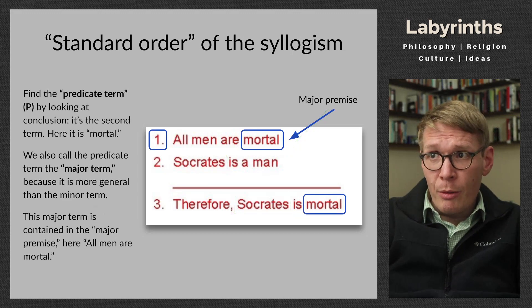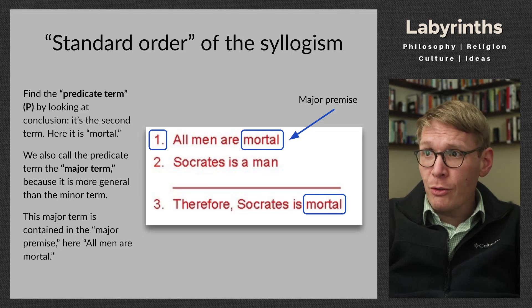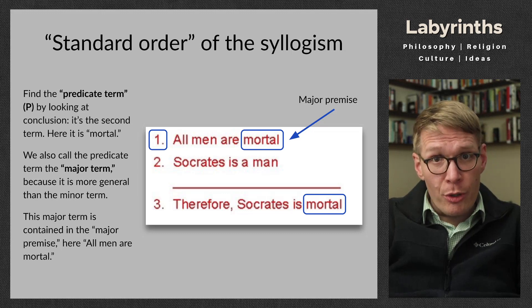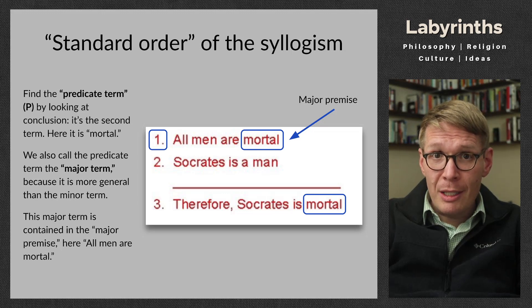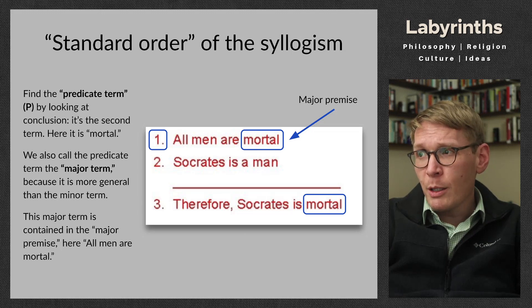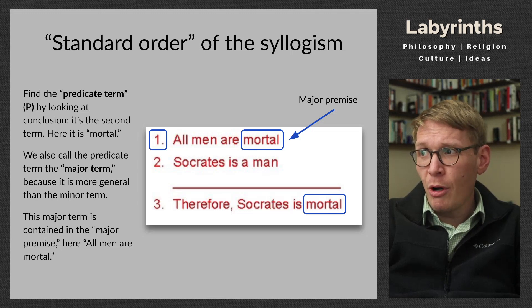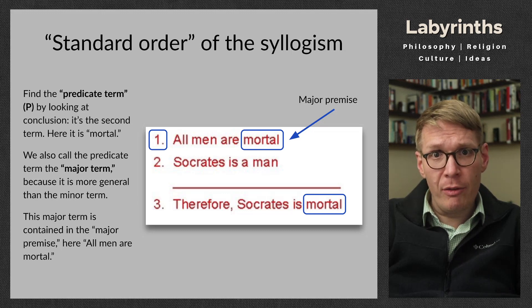The predicate term, symbolized by the letter P, we can again find by looking at the conclusion. Here it is the predicate of the conclusion: 'Therefore, Socrates is mortal' — mortal is the predicate term. This is also called the major term, and it's called so because it is more general than the minor term. Socrates is just one individual, but 'mortal' pertains to everything that is mortal — it's rather larger in scope. We find the predicate term in the premises, and the premise in which we find it is called the major premise.